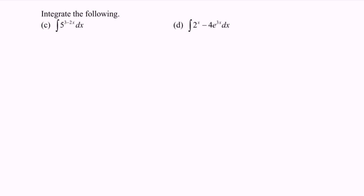Next we have question c. Integrate the situation, and we will have 5 to the power of 3 minus 2x over negative 2, ln 5 plus with the c.